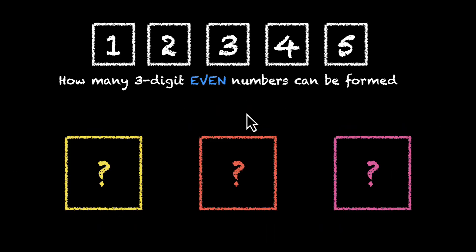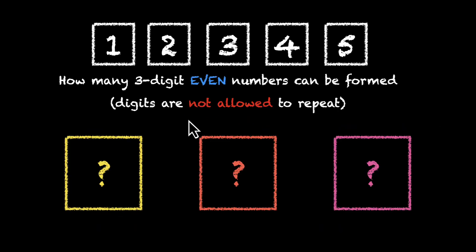But what happens when the digits are not allowed to repeat? What if we have to find 3-digit even numbers when the digits are not allowed to repeat? Pause the video if you want to give this a shot.